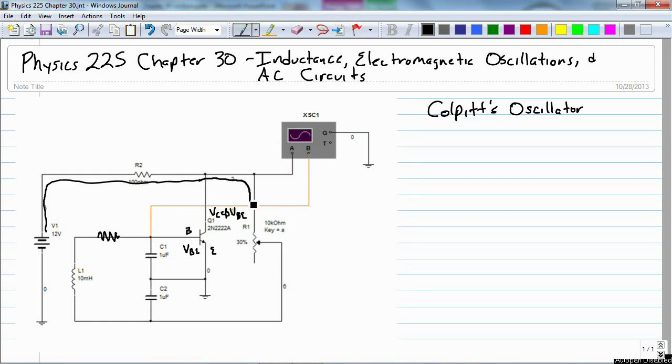So the current is going to skip over and go through resistor R1, and I have it set as a variable resistor, and I'll explain why here in a minute. And then it starts to charge up this capacitor, C2.